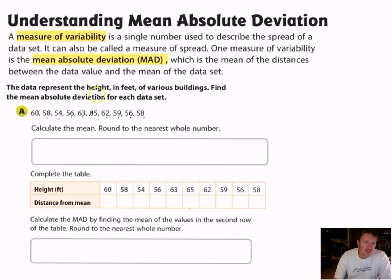So here's an example. It says the data represents the height in feet of various buildings. Find the mean absolute deviation for each data set. So here we have a number of values and we want to try to find out the mean absolute deviation of that data. So we're going to calculate the mean and we're going to round to the nearest whole number. So the first thing I want to do is calculate the mean.